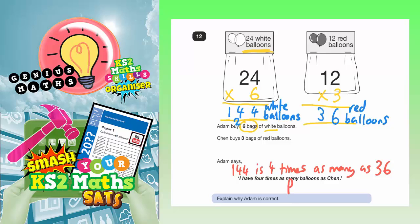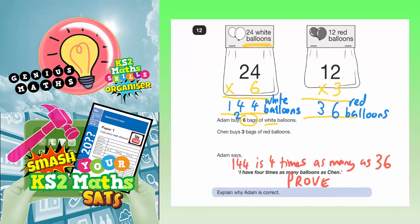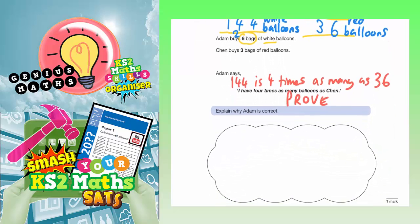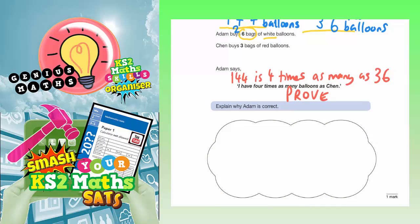If we can prove that four times 36 is 144, then we've proven that Adam is correct. So what we need to do now is use the column method and show that 36 times 4 is 144.